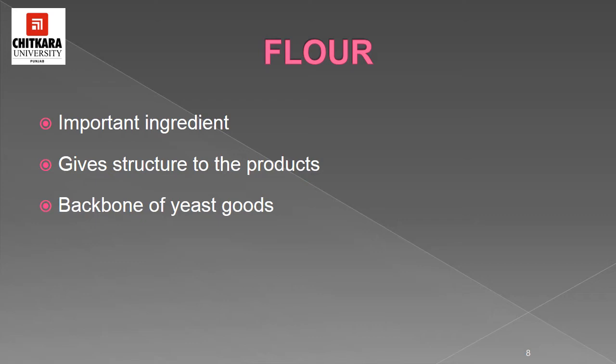Gluten strands are both plastic and elastic. Plastic means they can change shape under pressure, and elastic means they resume their original shape when that pressure is removed. Gluten is responsible for the volume, texture, and appearance of baked goods. It provides structure and enables dough to retain the gases given off by leavening agents. Flour itself does not contain gluten — only a dough or batter can contain gluten. Gluten is produced when glutenin and gliadin are moistened and manipulated, as when they are stirred or kneaded.